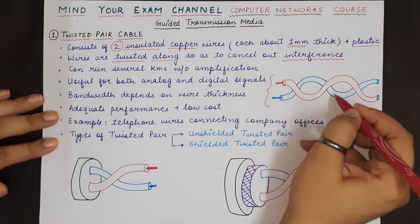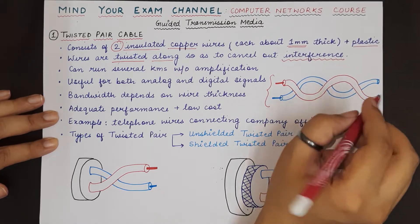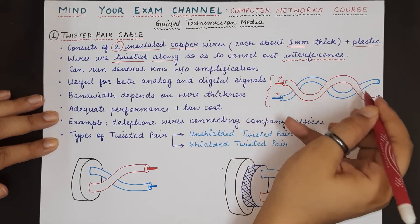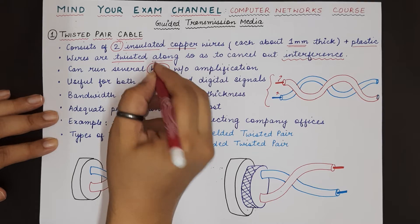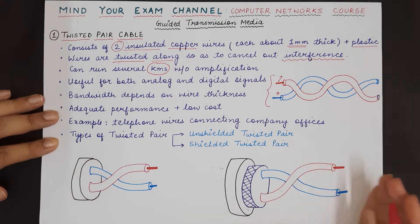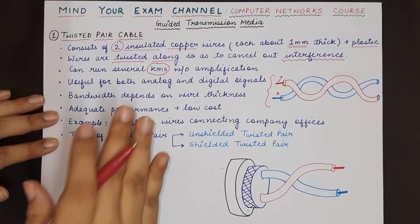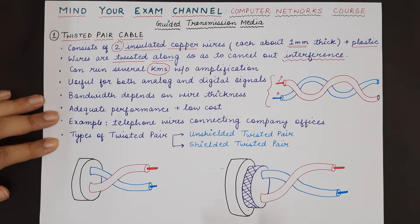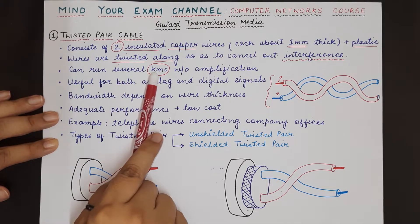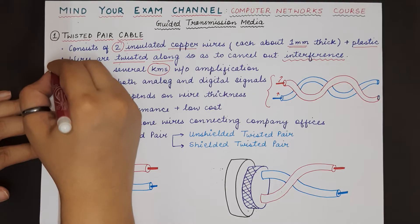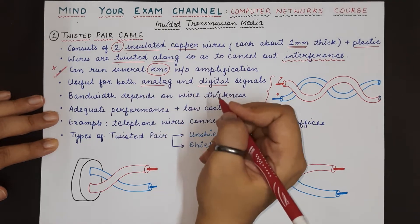This is one twisted pair cable consisting of one blue wire, which contains a copper wire covered with a plastic coating, and another red wire, again a copper wire covered with a plastic coating. Each twisted pair cable can be spread along multiple kilometers of distance and does not require amplification. Amplification is basically required when a signal becomes weak as it travels farther, but in the case of twisted pair cable, amplification is not required for multiple kilometers of distance.